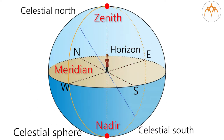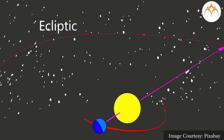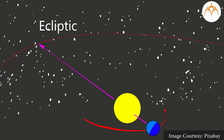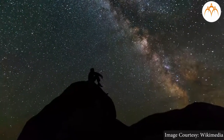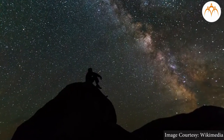Celestial equator — the circle we get when we expand Earth's equator is known as the celestial equator. The path the Earth moves around the sun is called the ecliptic.